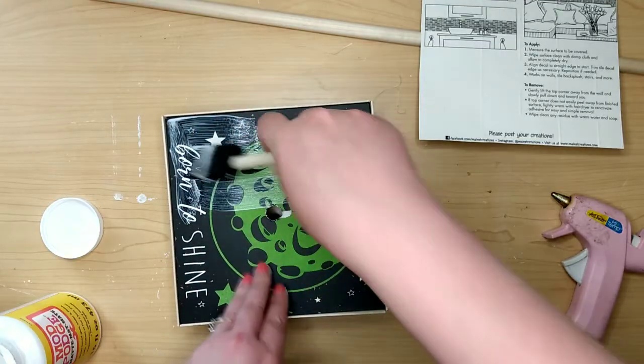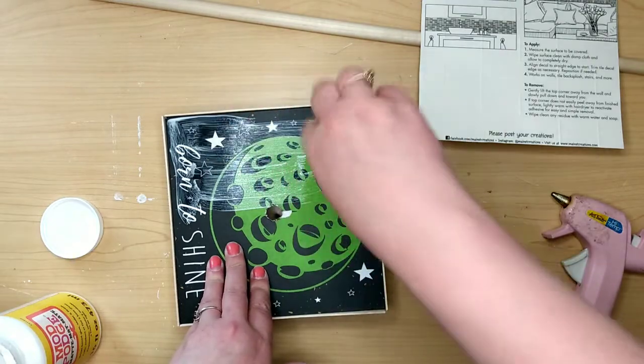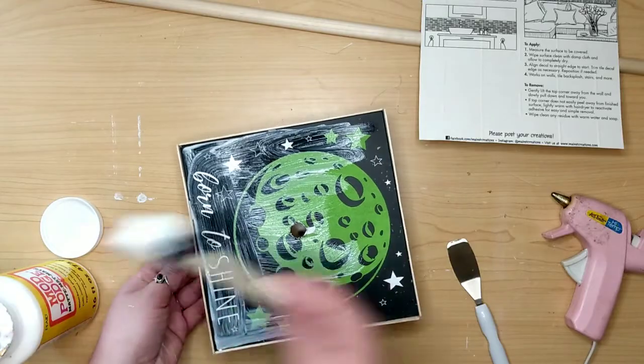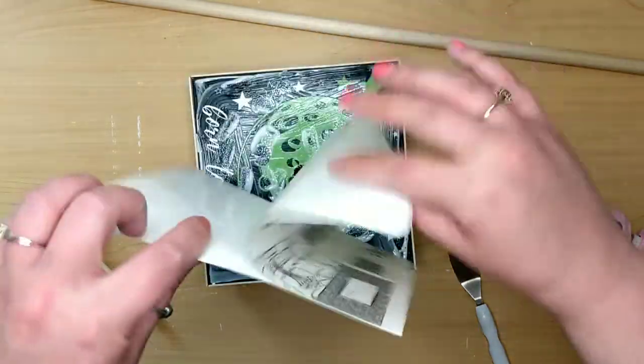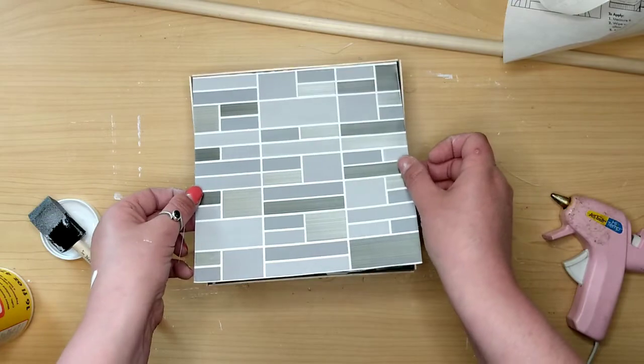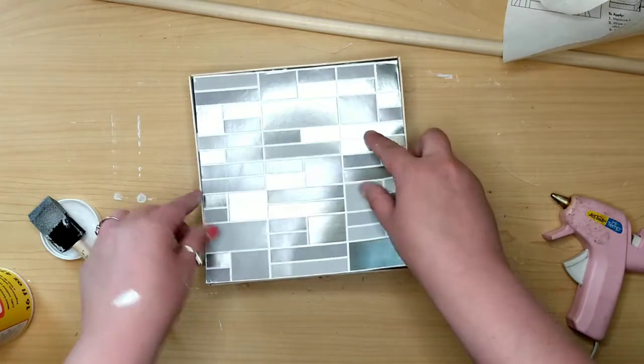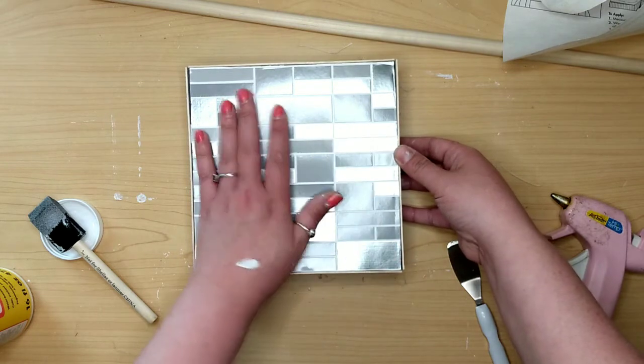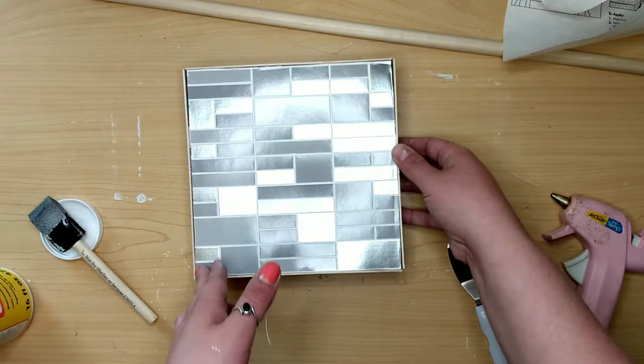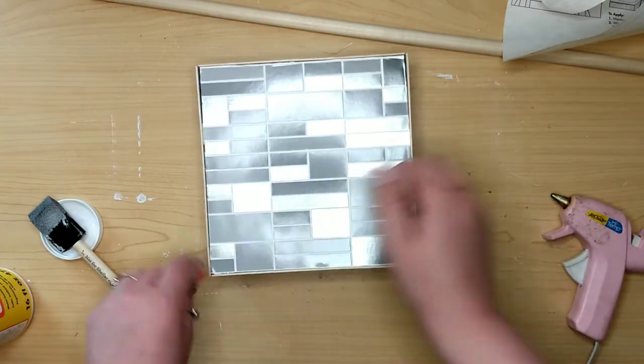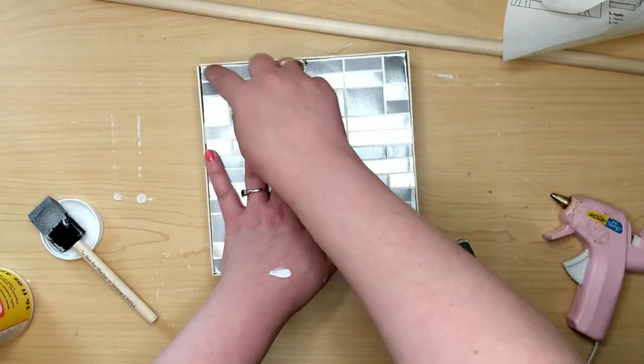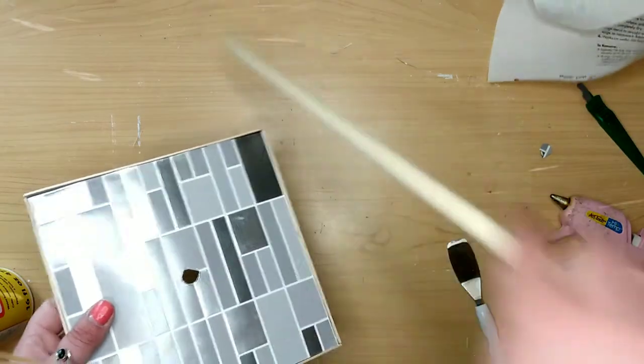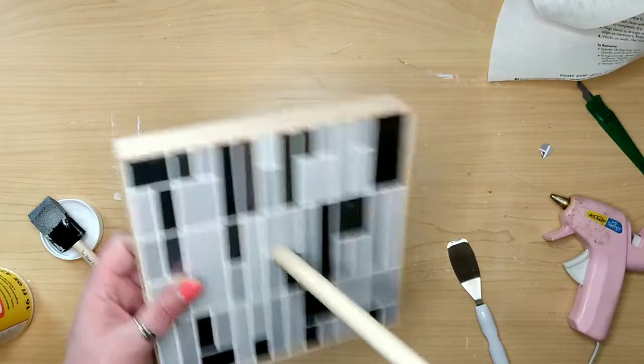And I used some Mod Podge for this because the green parts of the sign are textured because they're glow in the dark, and I just knew that adhesive, even though it's good, might not stick to that for very long. So I'm going to be extra careful and put some Mod Podge in there. Then I just stick in the tile, smooth it down, which is super easy because this is pretty thick. So you don't really have to worry about bubbles or anything like that. And then I took a craft knife and cut out the hole on the back.